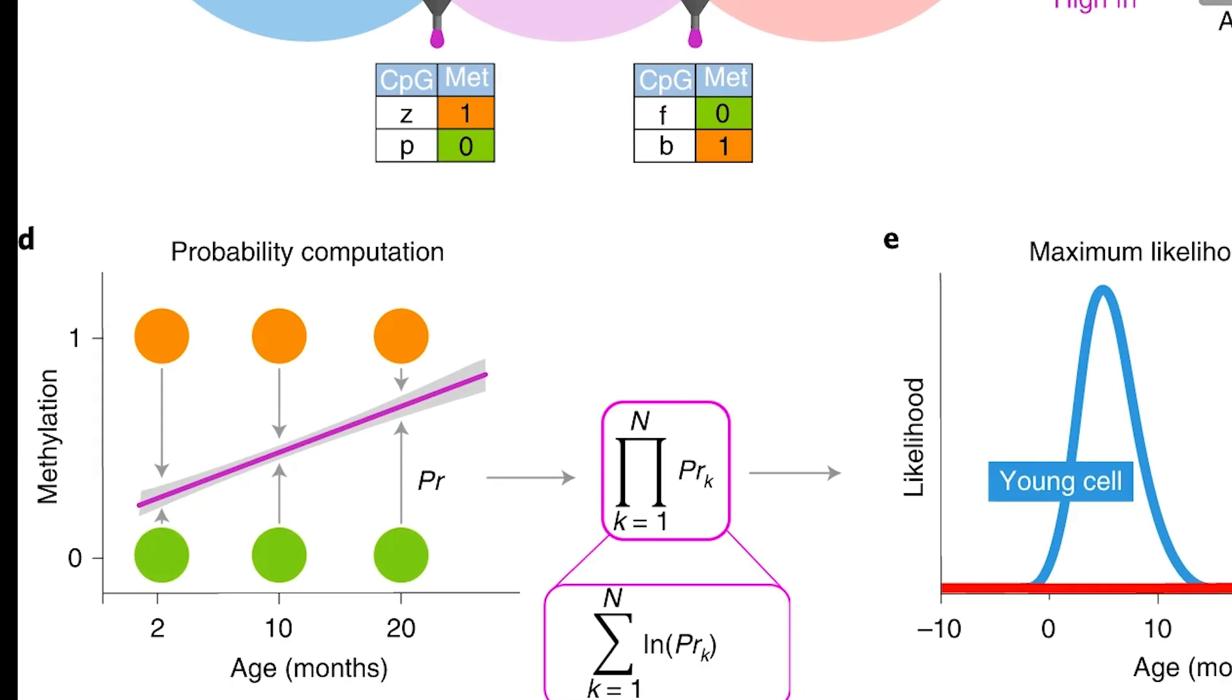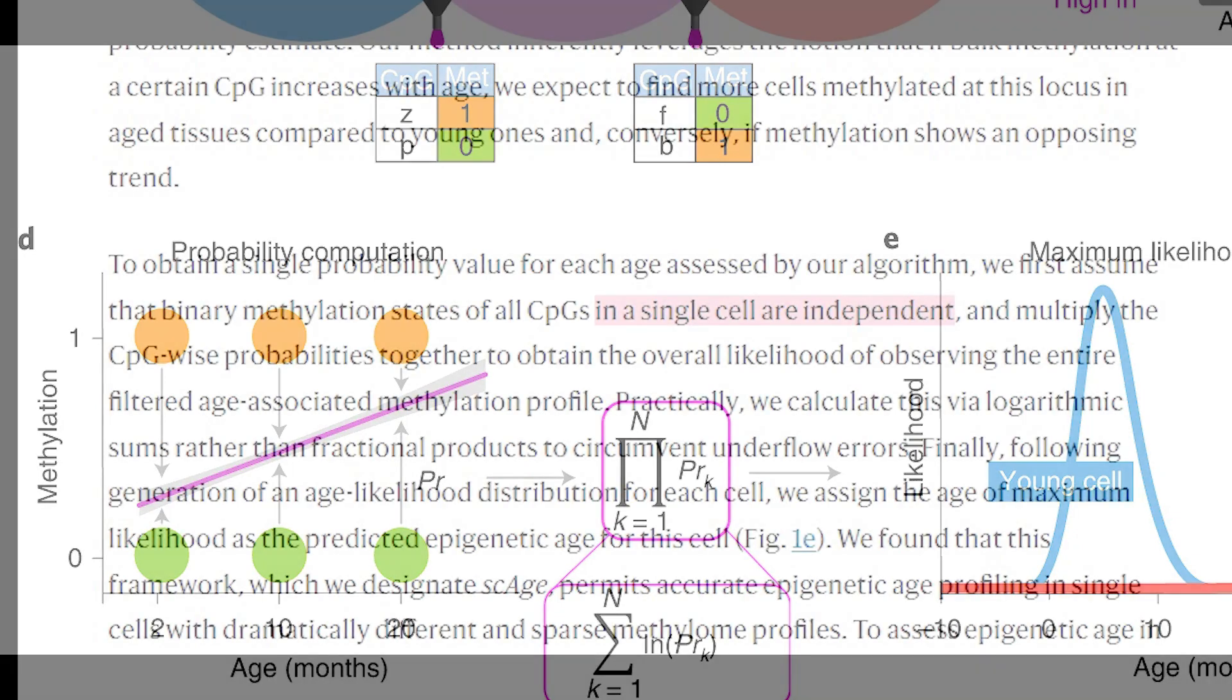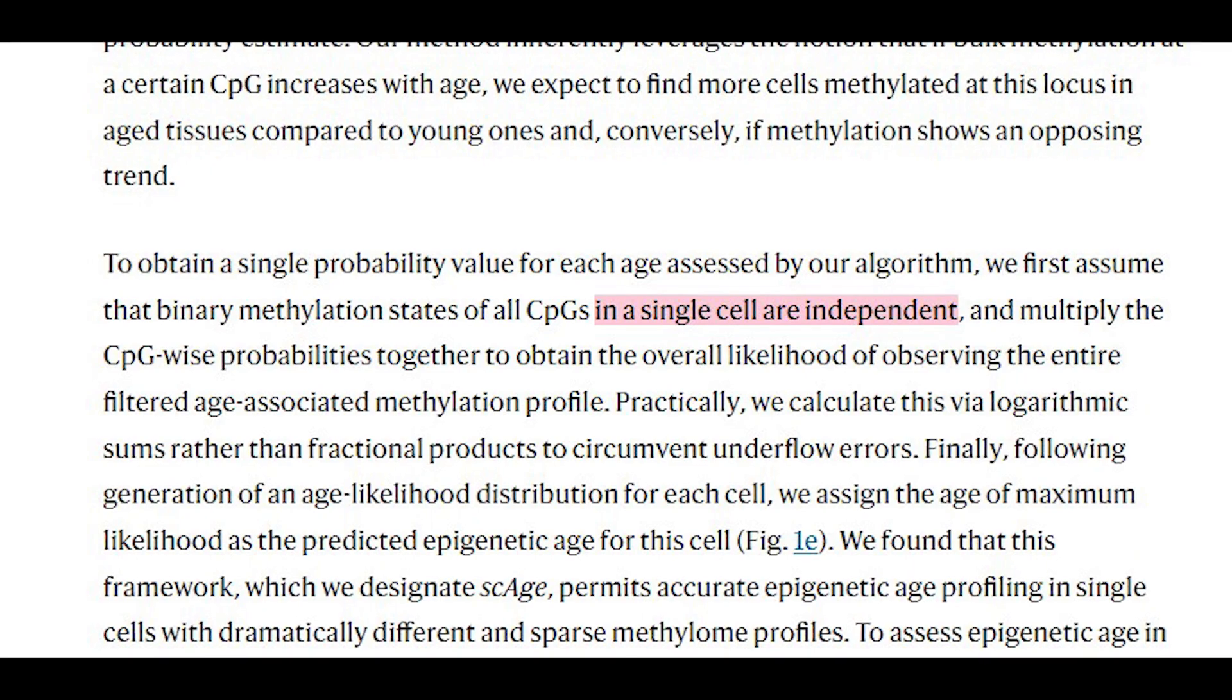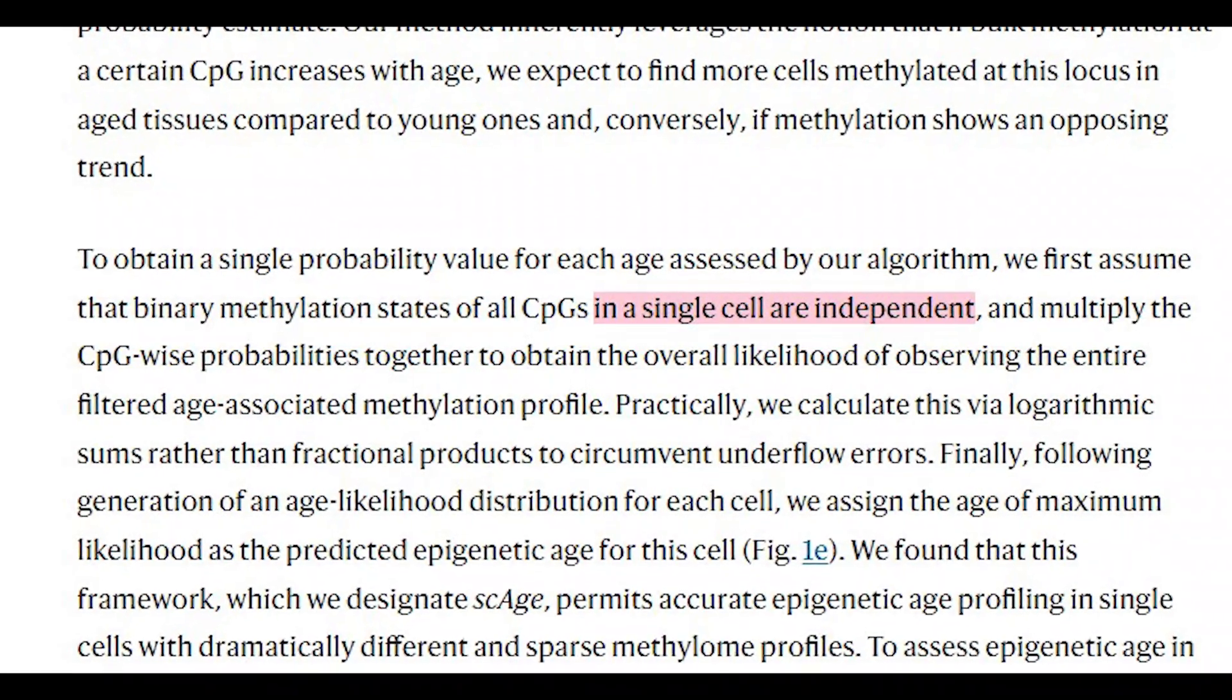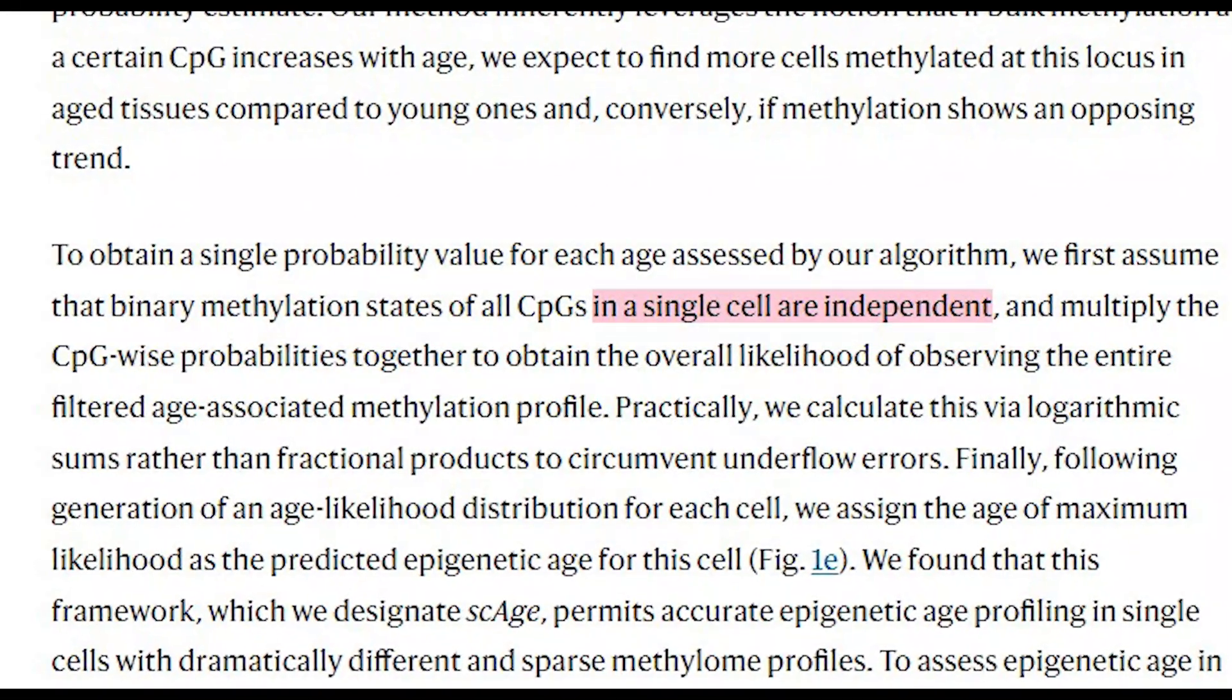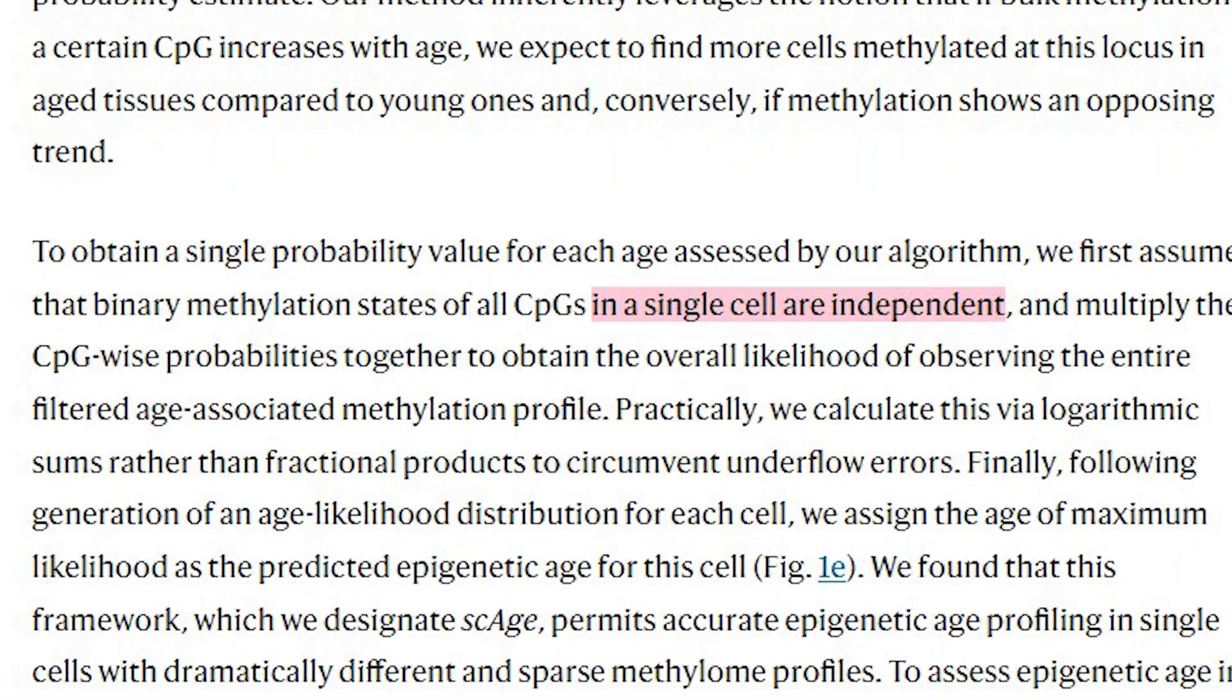And so to get a value of age for a single cell they assumed that each methylation state is independent and so they can multiply all the probabilities together to get an overall likelihood of the age-associated methylation profile. The age that is most likely is therefore the predicted epigenetic age of the cell.